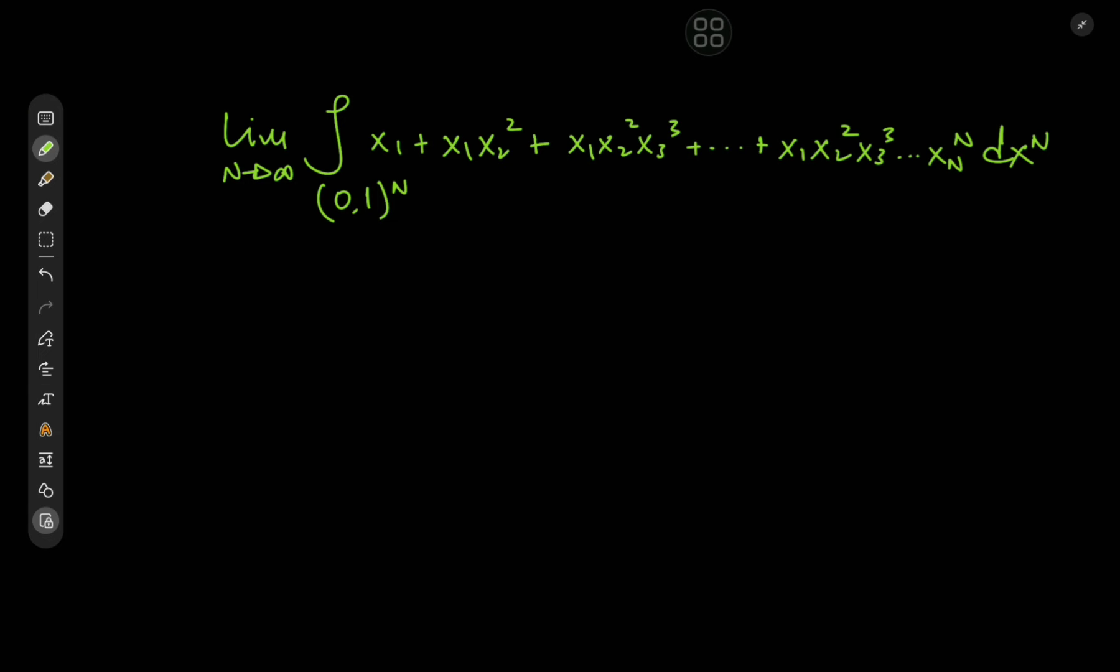Of x1 plus x1*x2^2 plus x1*x2^2*x3^3 plus all the way up to x1*x2^2 all the way up to xn to the n, dxn, where dxn is of course the differential element dx1*dx2 all the way to dxn. Maybe it's not as innocent as I was trying to make it out to be. But anyway, there is a very nice way to approach this problem.